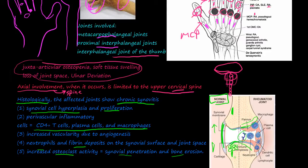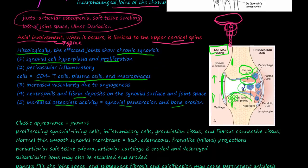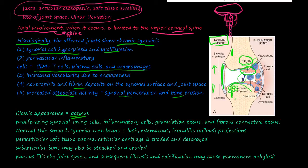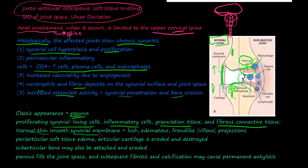A big feature is pannus formation. The pannus consists of proliferating synovial lining cells, inflammatory cells, granulation tissue, and fibrous connective tissue that all become enlarged and grow. Because the synovial membrane is undergoing hyperplasia and proliferation, it gets bigger. The normal thin smooth synovial membrane turns into a lush, edematous, frond-like or villous projection, so the joint can no longer articulate well.